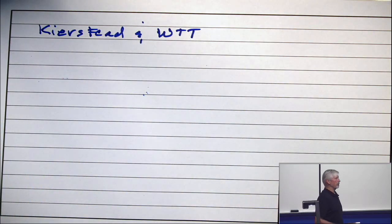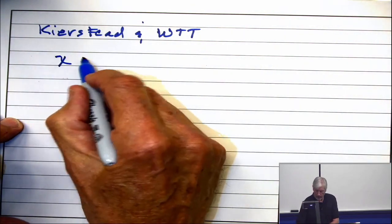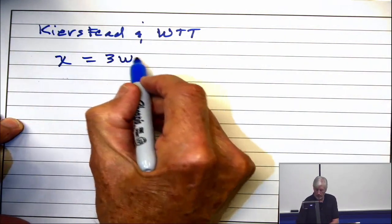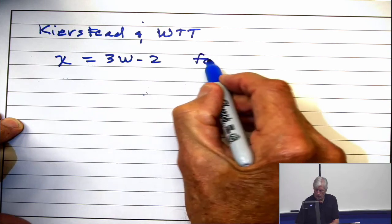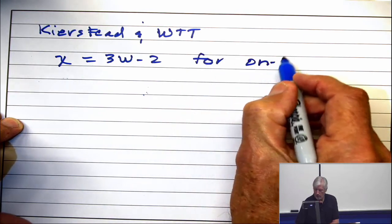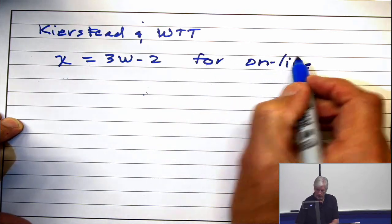And it goes like this. Chi equals three omega minus two for online interval graphs.